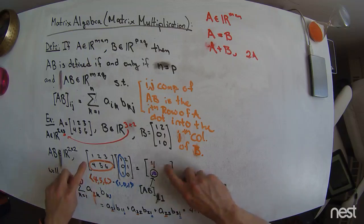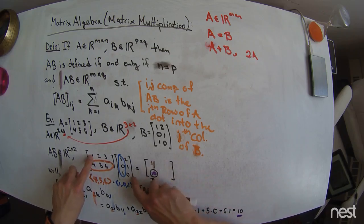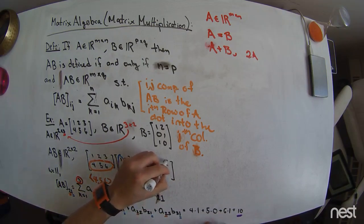And then this is the first row, second column of AB matrix, so that's a first row of A dotted into the second column of B, which is a 1 times 2, plus a 2 times 1, so that's a 4, plus a nothing, so that's another 4.